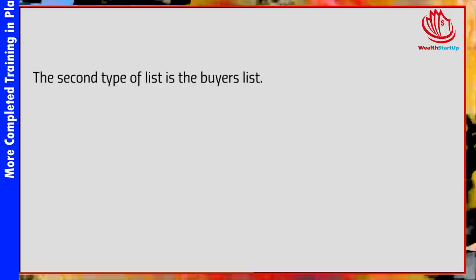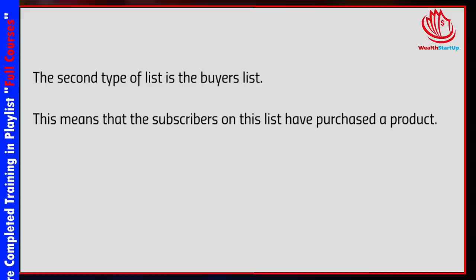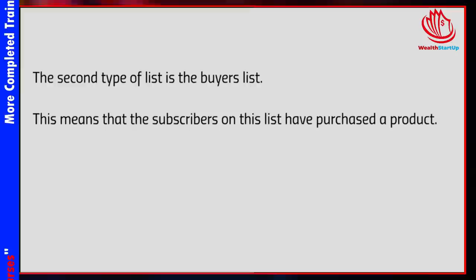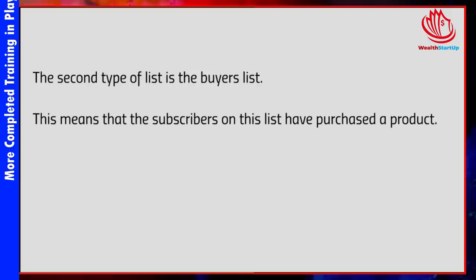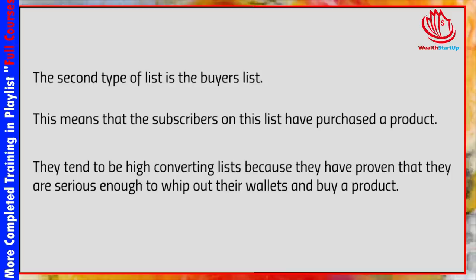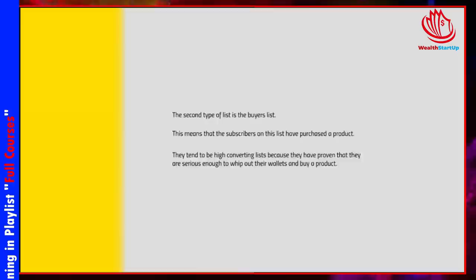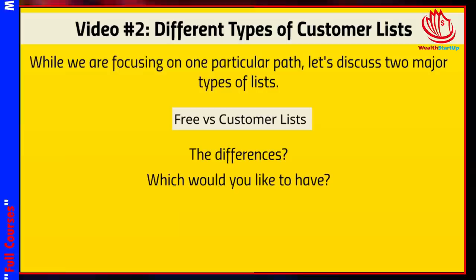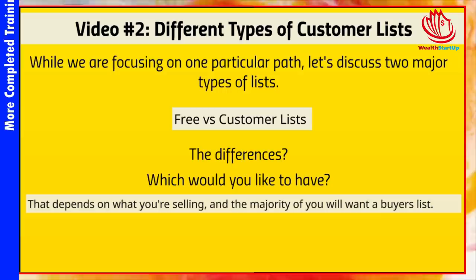The second type of list is a buyer's list. This means the subscribers have actually purchased a product — somebody lands on your sales page, buys a $7 or $17 item, and is added to your list. These types of lists tend to be very high converting because they have proven they're serious enough to whip out their wallets and buy a product. So think about it — which would you rather have: the free list or the customer list?